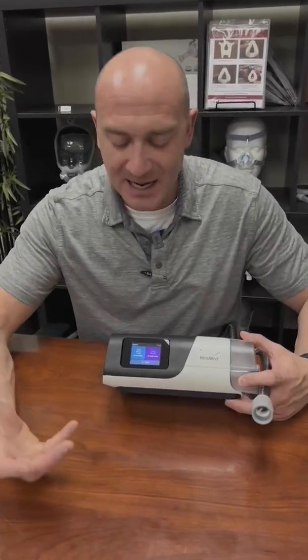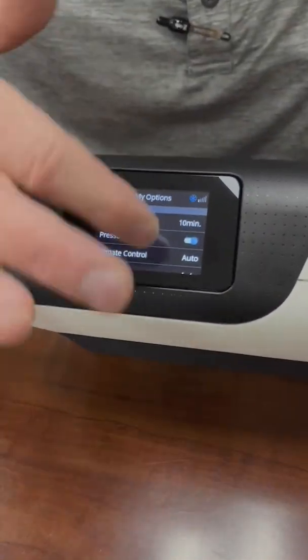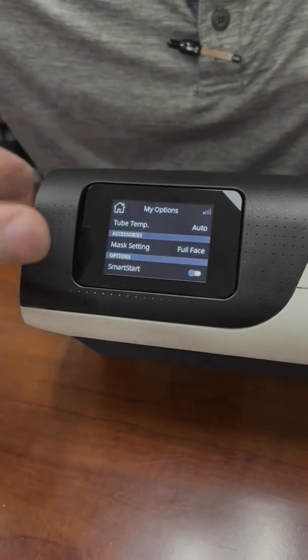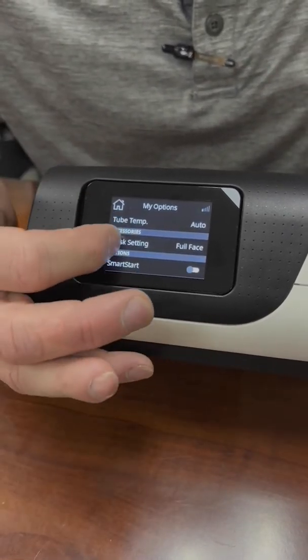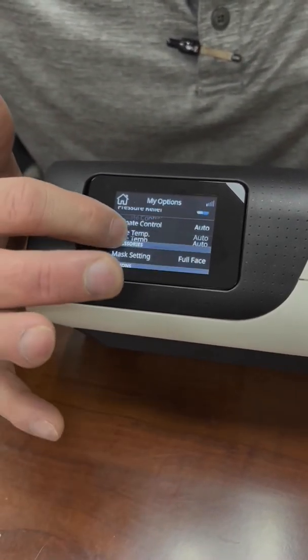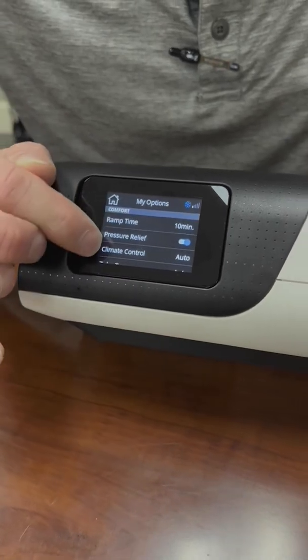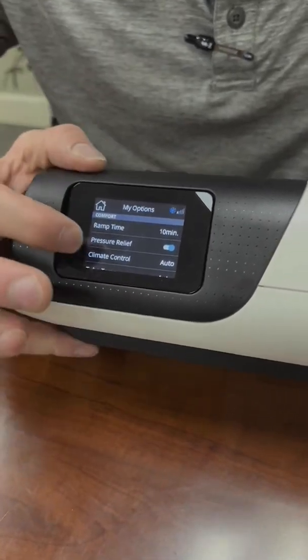So in the AirSense 11, if you go into the My Options menu, and if you see the menus, you can kind of see where this is, you're going to have an option to go over. You'll notice on here there's climate control, and sometimes you have to slide it up and down.